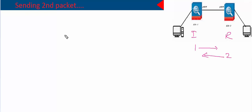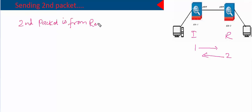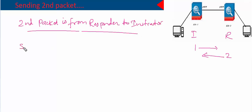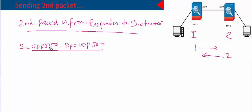Now, coming back to the second packet. The second packet is sent from the responder to the initiator, telling the initiator these are the parameters that I like and I'm going to use. This also goes on UDP 500 — source port is UDP 500 and destination port is UDP 500.